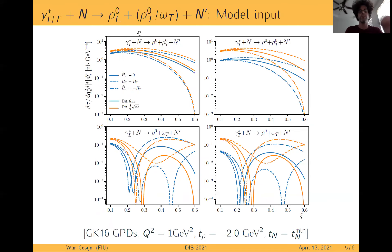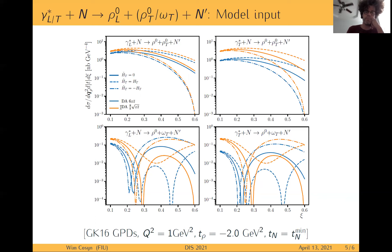On the other hand, the two meson production process does look promising. It's plotted at the nanobarn level for a bunch of different GPD models and distribution amplitudes. I picked one particular case — transversely polarized rho and omega vector mesons — which probes transverse GPDs, and you do see that the different models give different predictions.